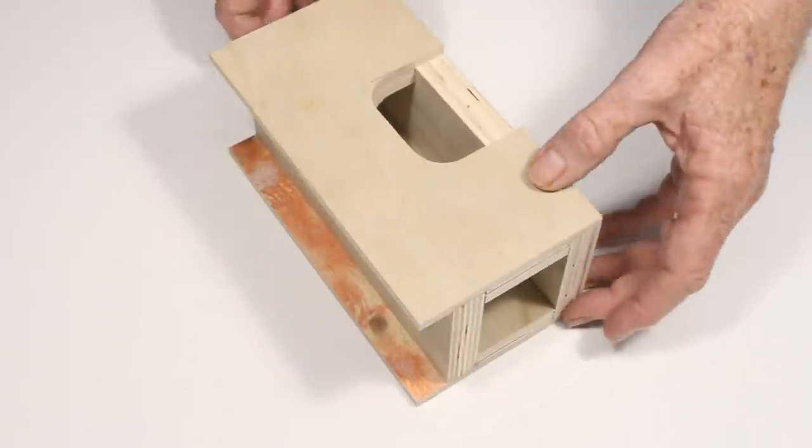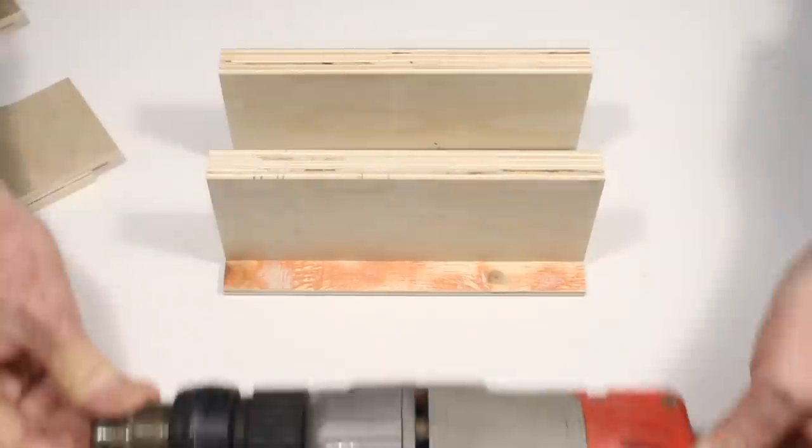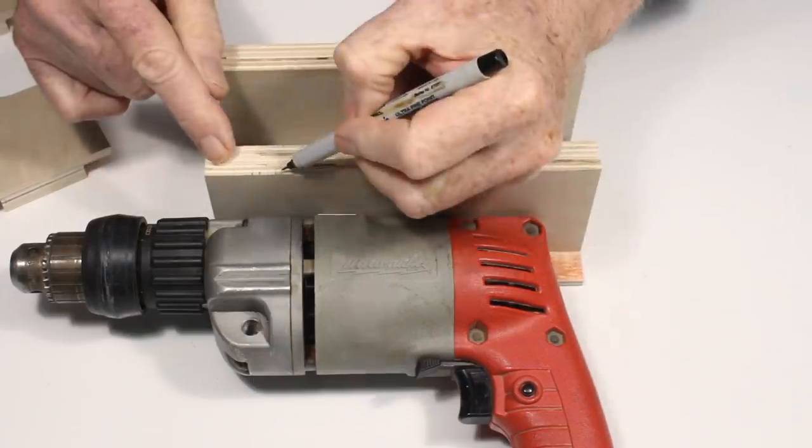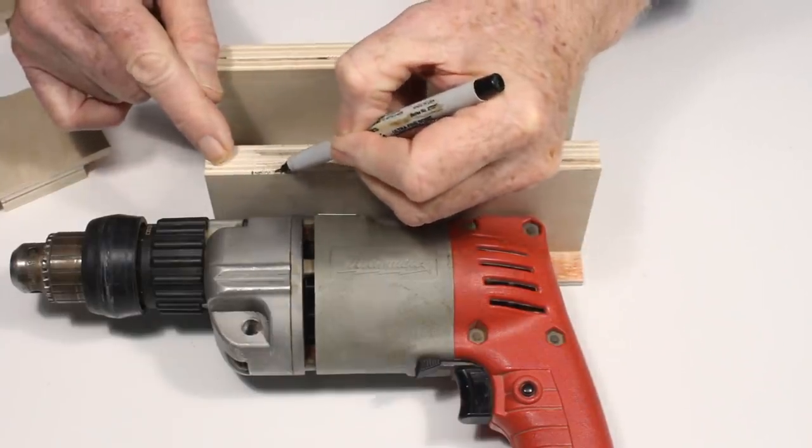The hose clamps that hold the drill onto the headstock must be located so that they grip the drill solidly and avoid the trigger and the ventilation openings. Each drill is shaped differently.